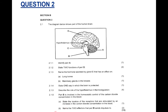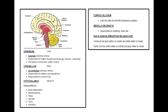Before we answer Question 2, let's do some revision of the content you need. Here is my summary on the brain. In beige, the part I'm showing with my pointer, that's the cerebrum. I teach the functions of the cerebrum as VHS: V — controls voluntary actions; H — responsible for higher thought processes, for example memory and reasoning; S — responsible for perception of senses, such as sight and sound.